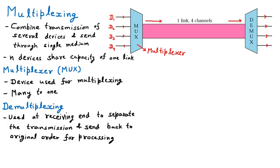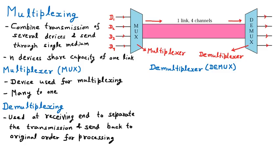In the diagram there is a DEMUX, which is the demultiplexer. It is used for demultiplexing — one is divided back to four. This device does the reverse of the MUX multiplexer. The device used for demultiplexing is the demultiplexer, and it is one-to-many, which is the reverse of the multiplexer where many devices are combined to one, and here one data is divided back to multiple devices.